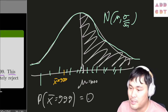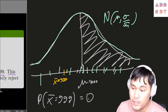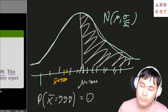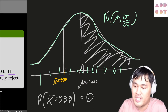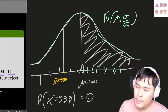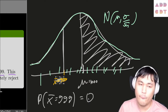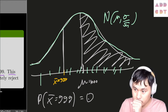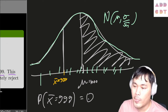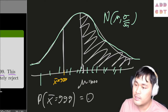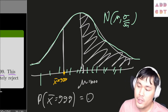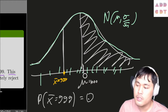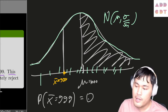Remember that when we talk about probability in a continuous distribution, we talk about area. The area at a single point is just a single line, and the area of a single line is zero. So we cannot use the equal sign to get the probability. Instead, rather than looking at one single point, we ask: how far away is that point from the average? How far away from the point to the average?